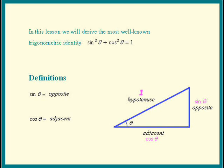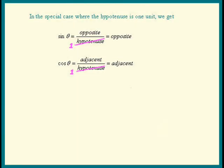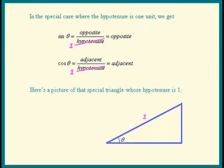Here's a summary of what just happened. Now we see a special right triangle whose hypotenuse is 1. The opposite side becomes sine theta, and the adjacent side becomes cosine of theta.